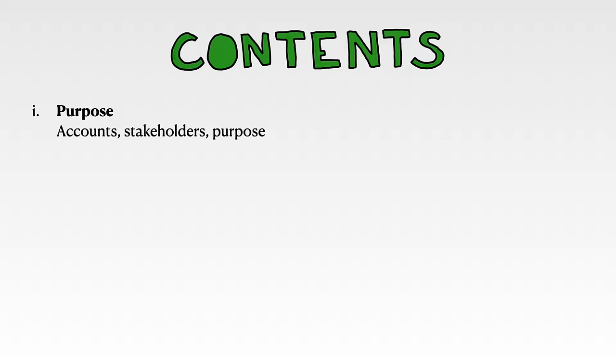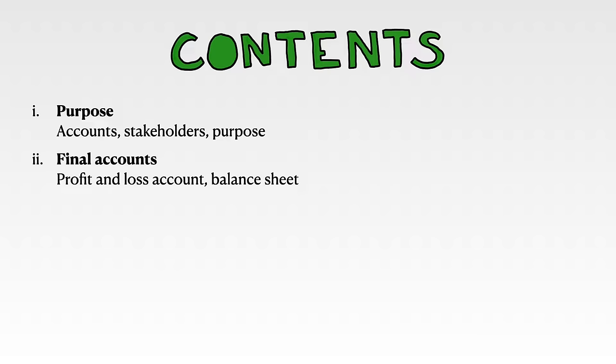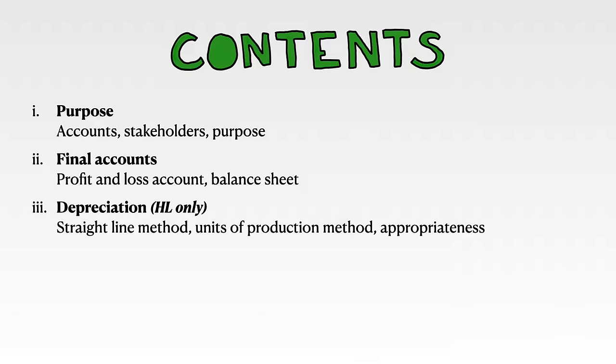The second part is final accounts — profit and loss account and balance sheet. The last part is depreciation, which is for AHL only. There we'll learn two methods of how to calculate depreciation. As always, please like this video, subscribe, and have a look at assessment objectives before we start learning new material.